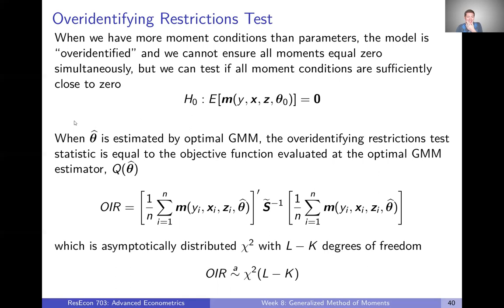When we estimate theta-hat using optimal GMM, we can construct this test statistic — we'll call it the over-identifying restrictions test statistic, abbreviated OIR. That's going to equal this expression right here, which it turns out is just our GMM objective function evaluated at the optimal GMM estimator. If that value is too big, we conclude that we haven't gotten our moment conditions close enough to zero. It turns out this test statistic is asymptotically chi-squared with l minus k degrees of freedom.